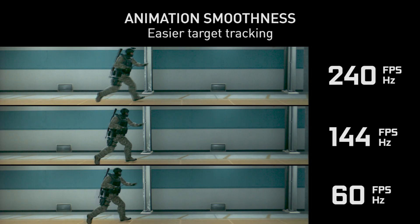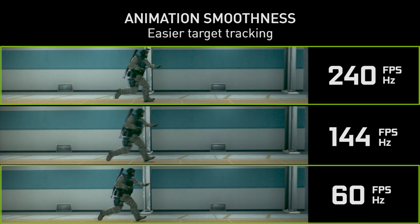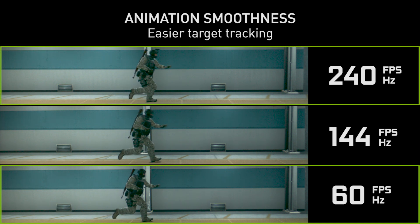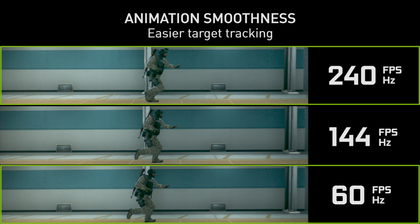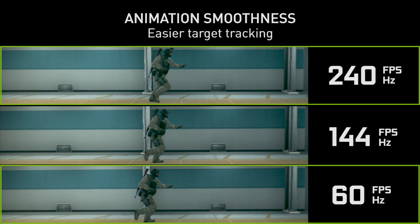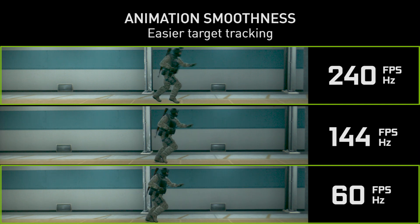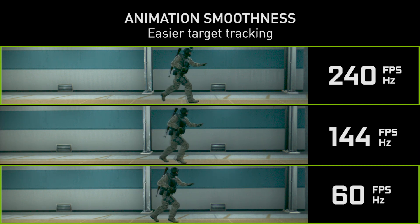Looking at the top and bottom comparison, you can see that 60 fps and 240 fps video have a very different feel in terms of smoothness. The 60 fps video has much larger animation steps, making it feel much less smooth than the 240 frames per second video.